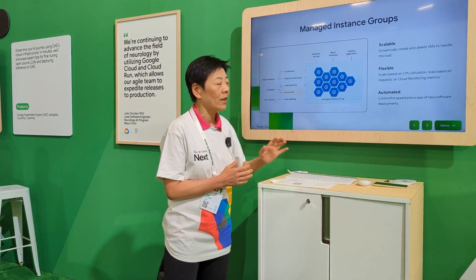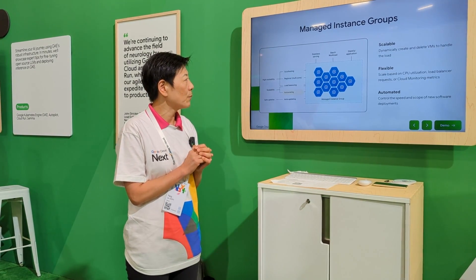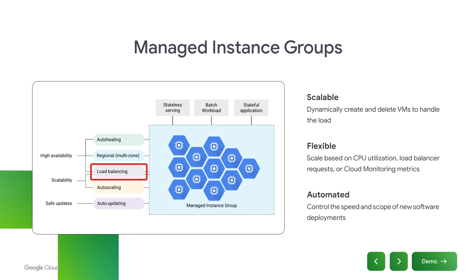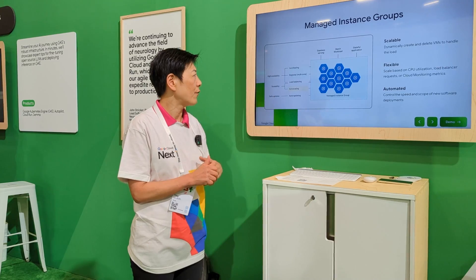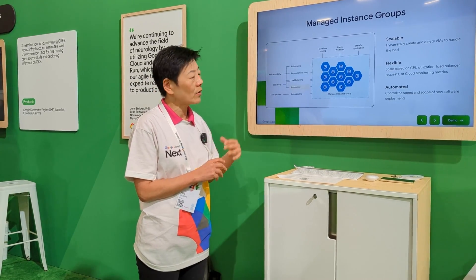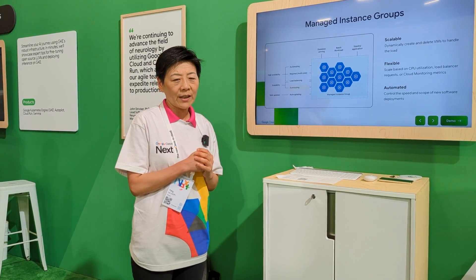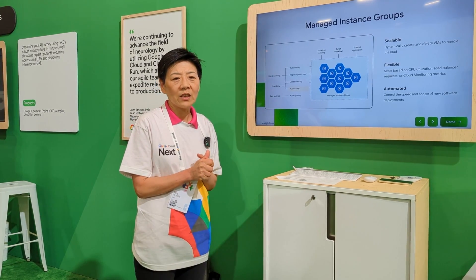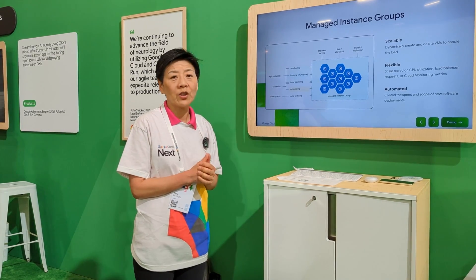Last but not least, I want to talk about our managed instance groups product, where customers can group different instances and set different policies in terms of capacity. On the back end, we manage auto healing as well as auto scaling and load balancing to really increase CPU utilization for our customers, therefore reducing overall cost. With all three of these products, we believe we can really help customers reduce cost when using GCE virtual instances to help them achieve their business goals.